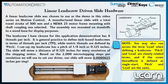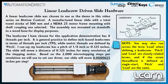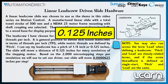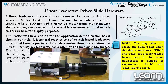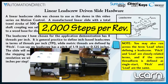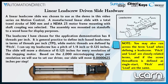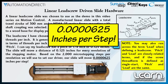The lead screw on the slide has 8 threads per inch. This means the slide will move a total of 1 inch for 8 full revolutions of the lead screw. Inch-based lead screws are defined in terms of threads per inch, abbreviated as TPI. Metric lead screw threads are generally defined by pitch. My slide lead screw has a pitch of 1/8 inch, or 0.125 inches, meaning the slide can move 0.125 inches for every revolution of the stepper motor. Based on the 2000 micro-stepping steps per revolution I will use from the SureStep drive, my slide will move 0.0000625 inches per step.